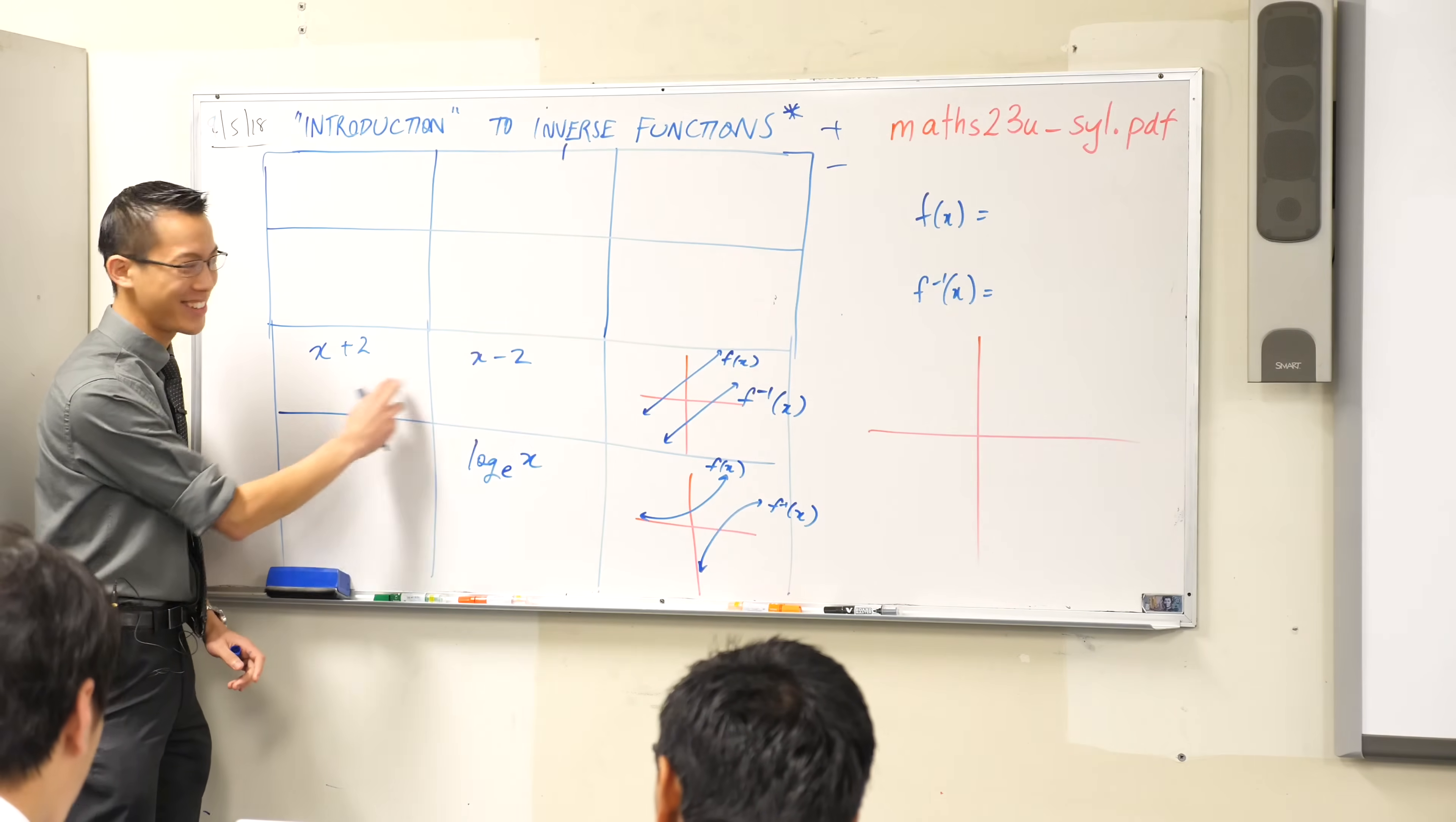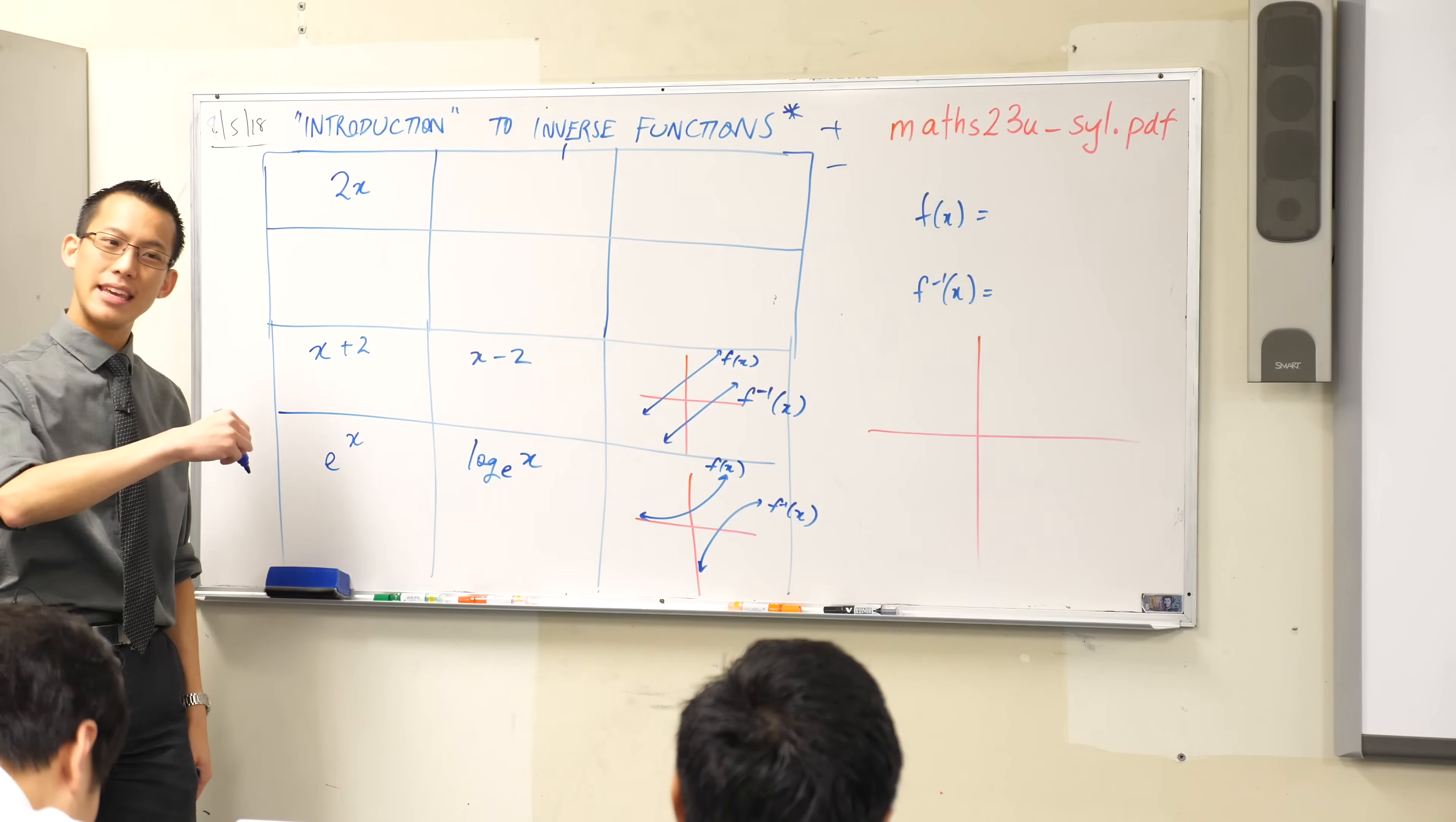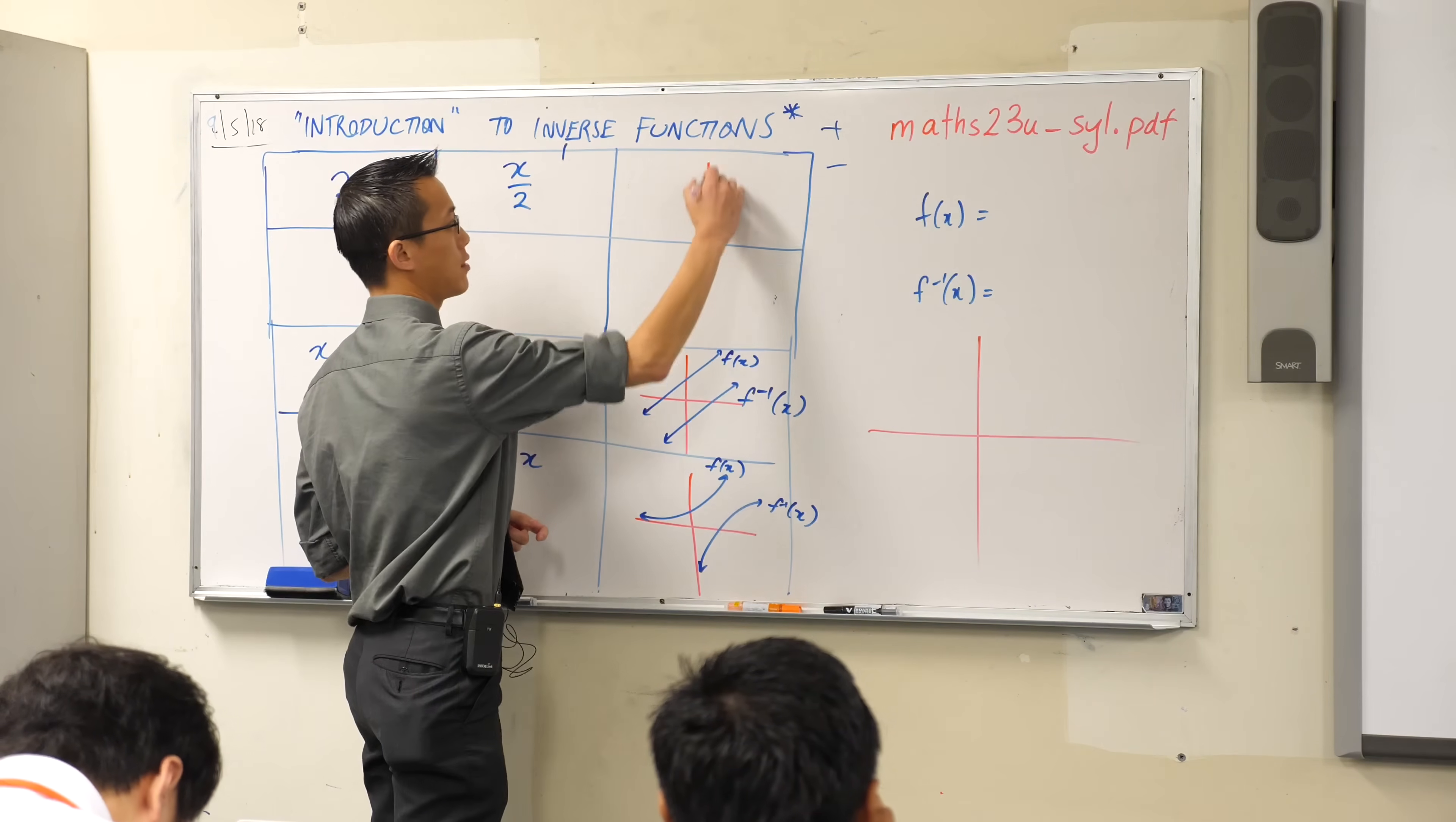we talked about adding two and subtracting two. Well, if you multiplied by two, that's a function. I mean you can multiply by any number you like. Then, it's inverse, what would go in the reverse direction would be division by two, x on two.